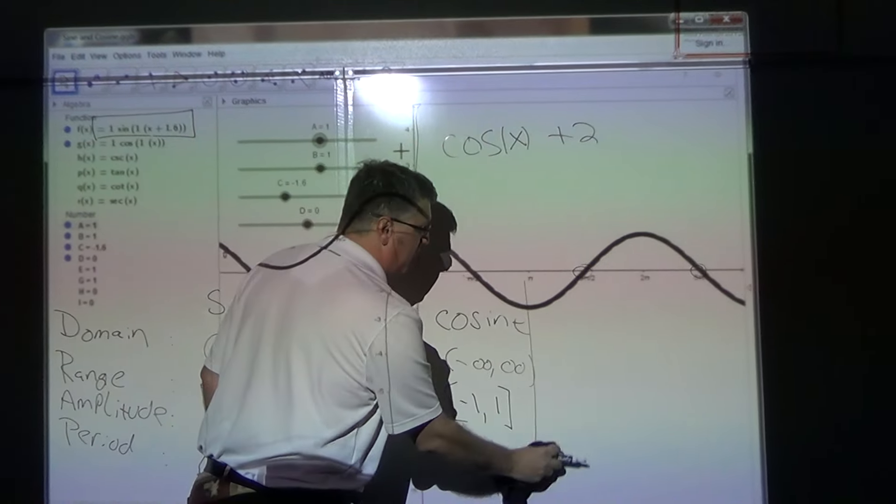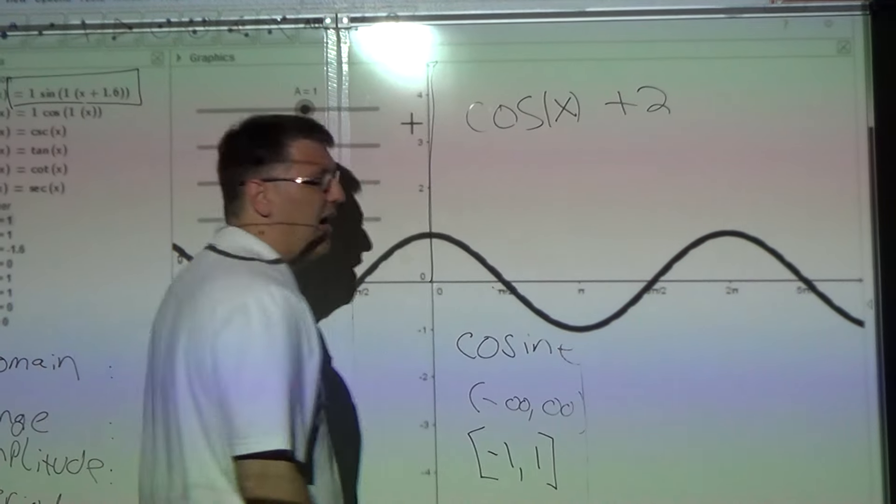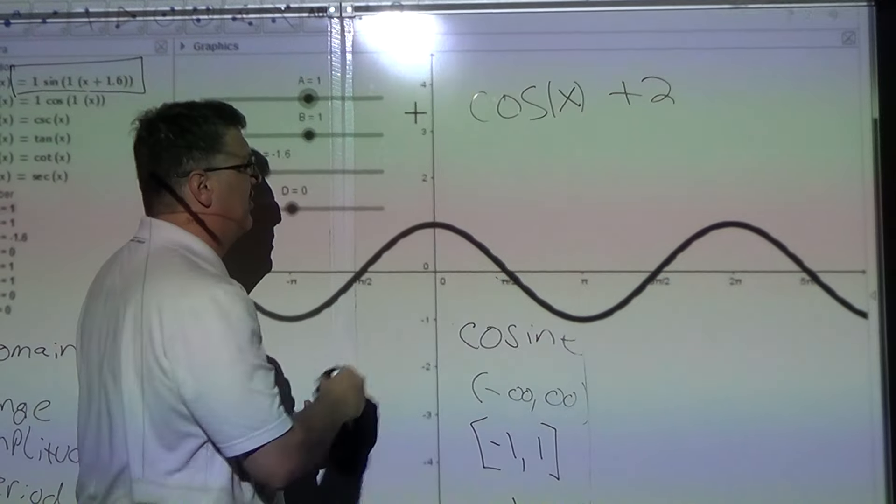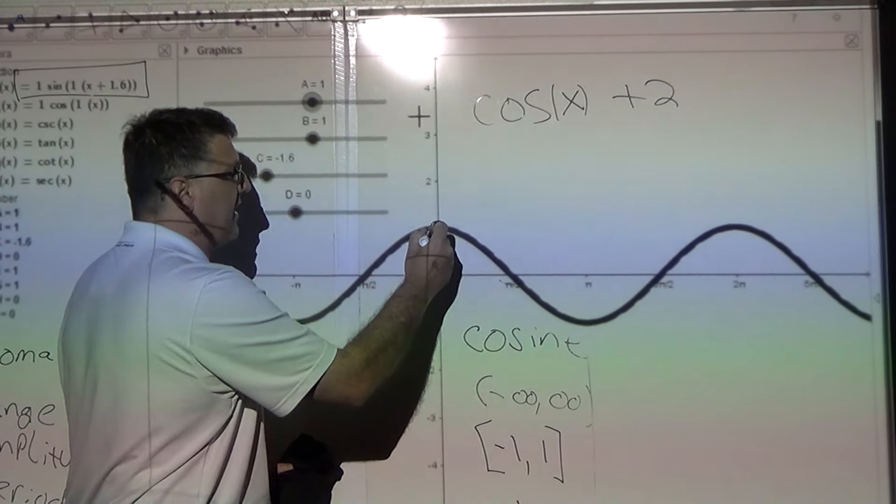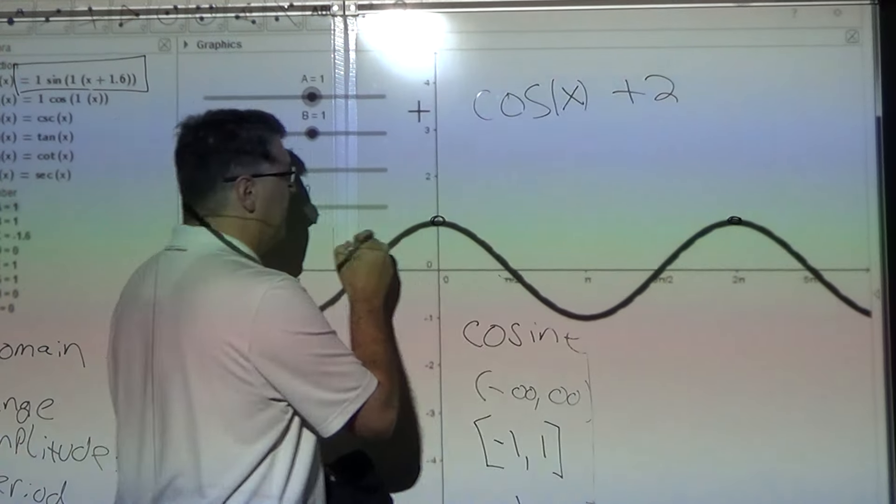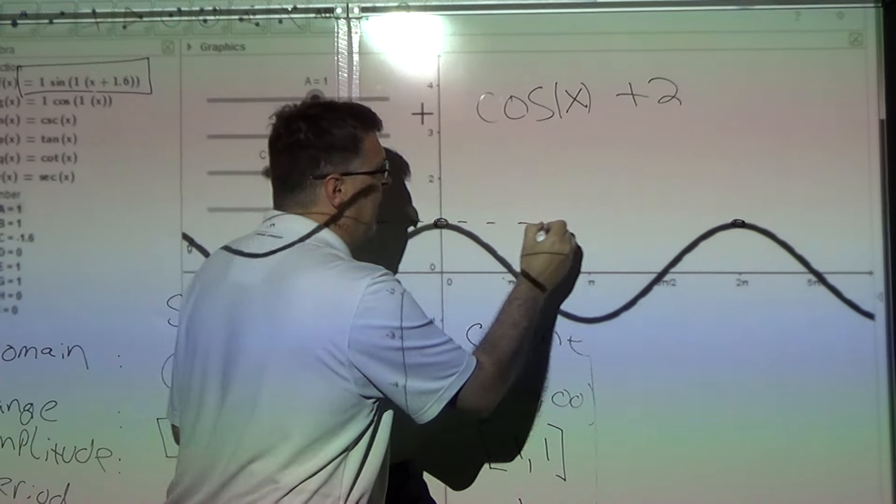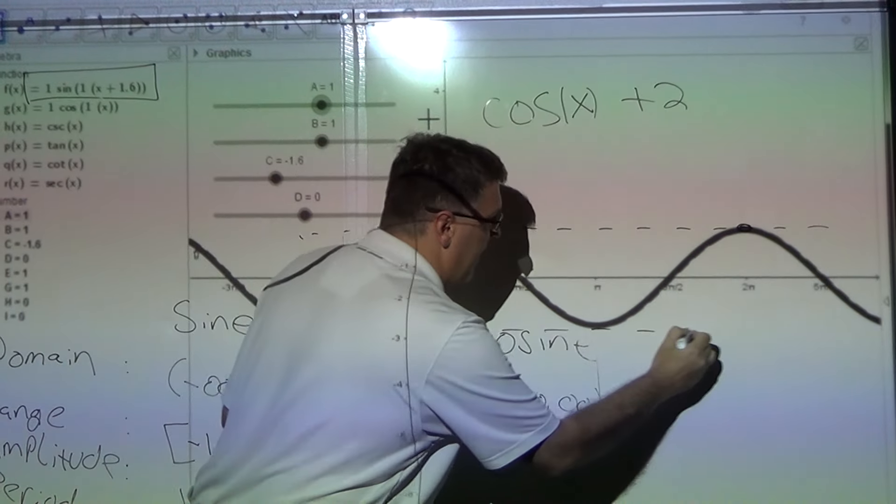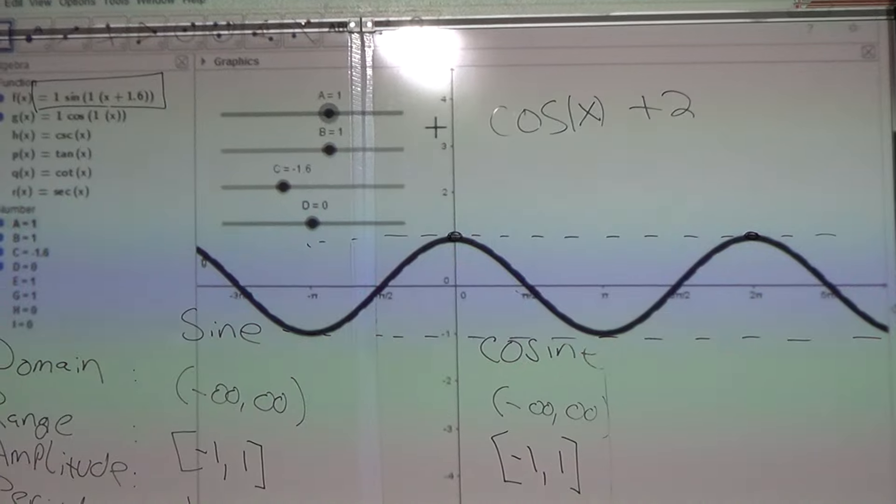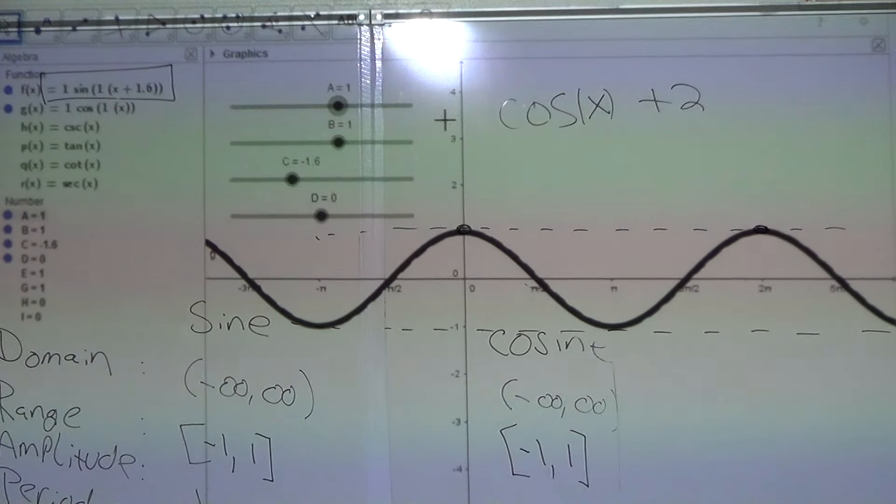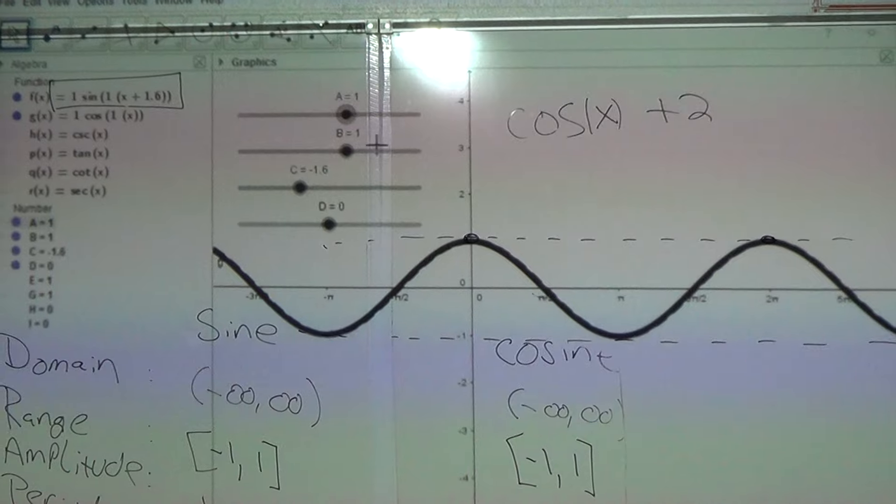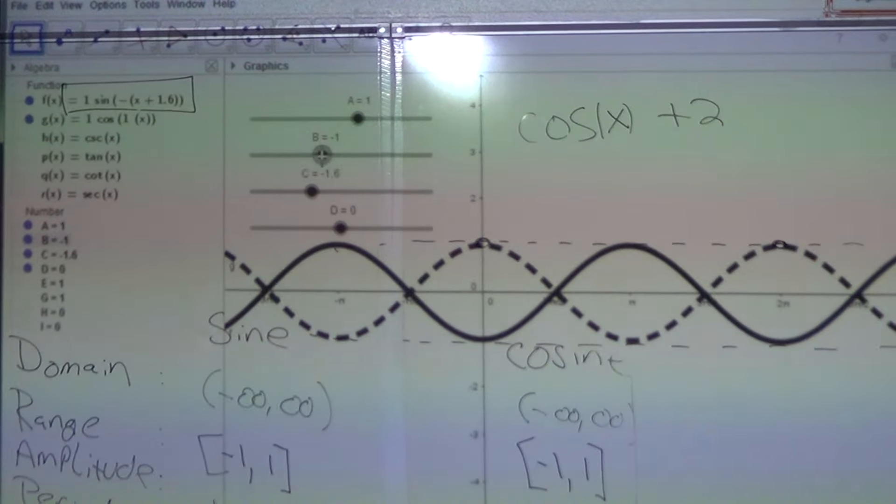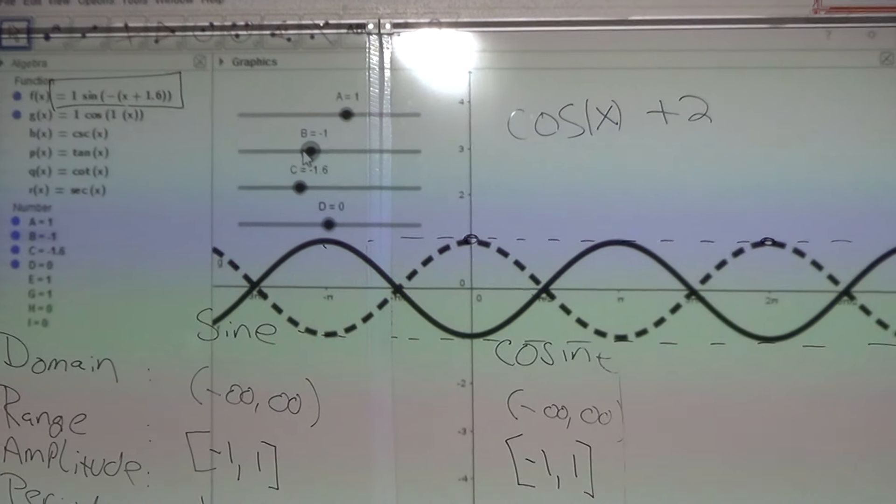All right. Now, we're going to play with what we call the period. How long does it take to repeat? But this time, I want you to pay attention to your maximums. There's a maximum line right here at 1, and right down here at negative 1. So, Alex, on B, make it... Just move it. I don't care. Keep going. Go to a different number besides 1 or negative 1.